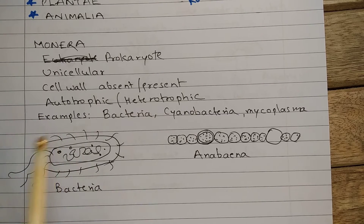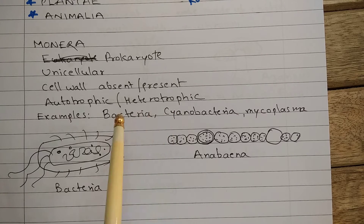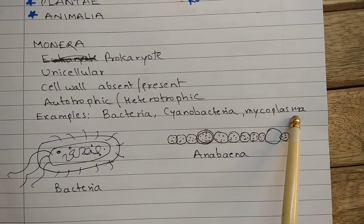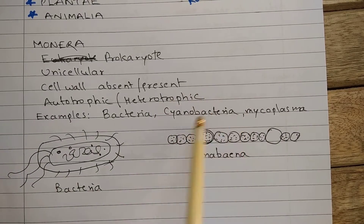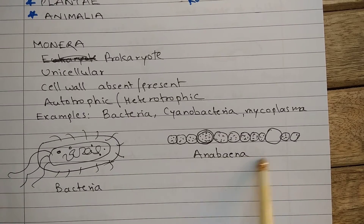The mode of nutrition is autotrophic or heterotrophic. Those which are autotrophic can be photosynthetic or chemosynthetic. Photosynthetic means organisms prepare their food by utilizing sunlight, and chemosynthetic means organisms prepare their food by utilizing inorganic materials. The heterotrophs can be phagocytic or parasitic. Some examples are bacteria, cyanobacteria, and mycoplasma. Cyanobacteria is also known as blue-green algae and these are photosynthetic. This diagram shows a bacteria, and this is Anabaena, which is an example of cyanobacteria.